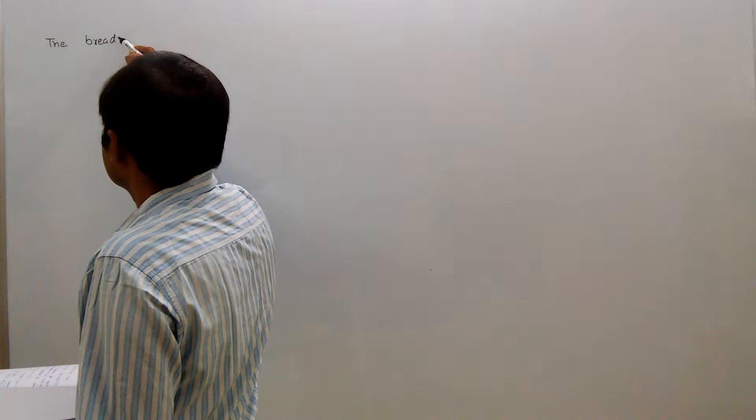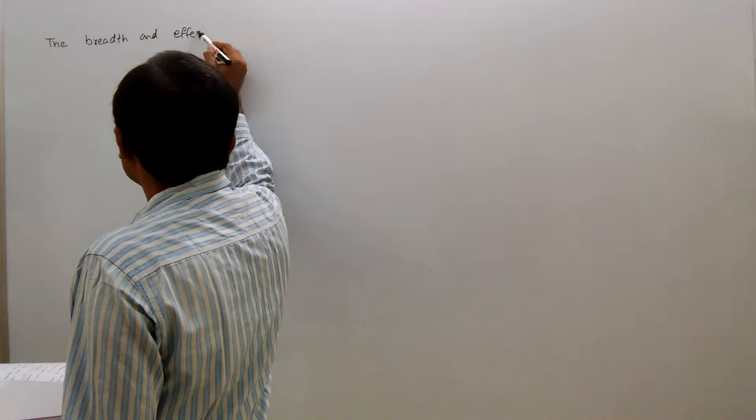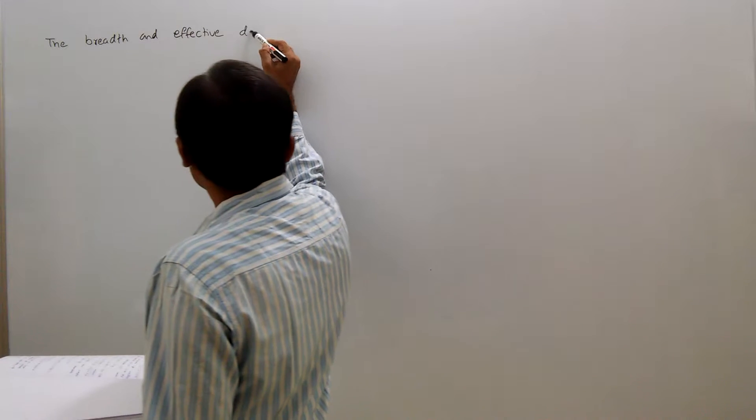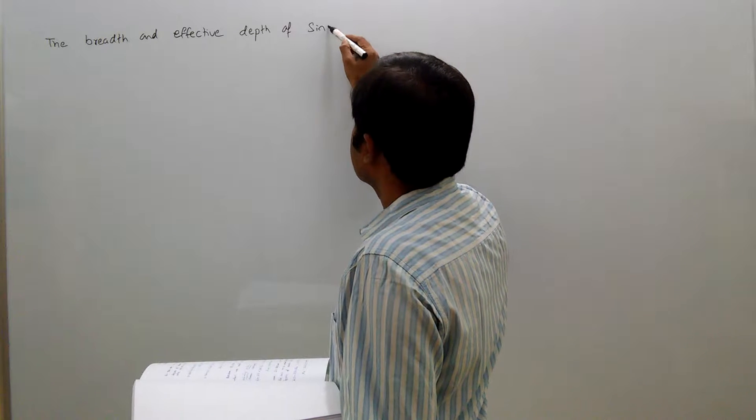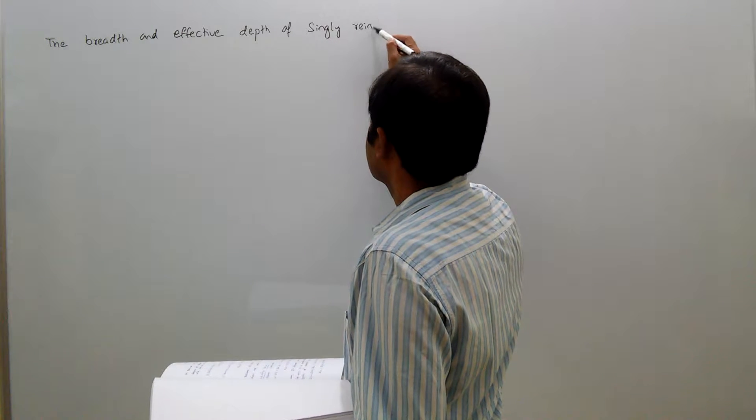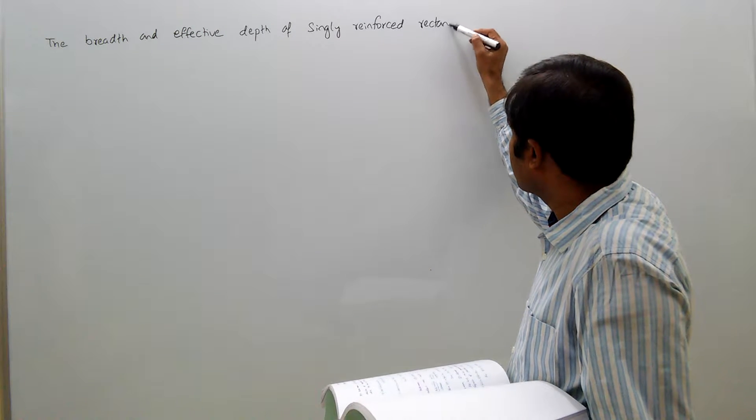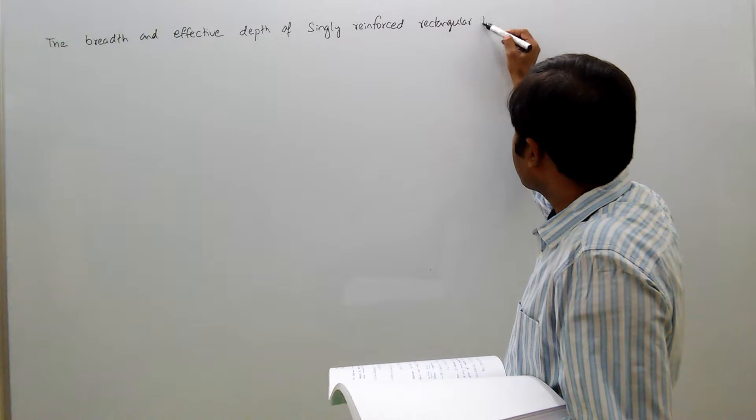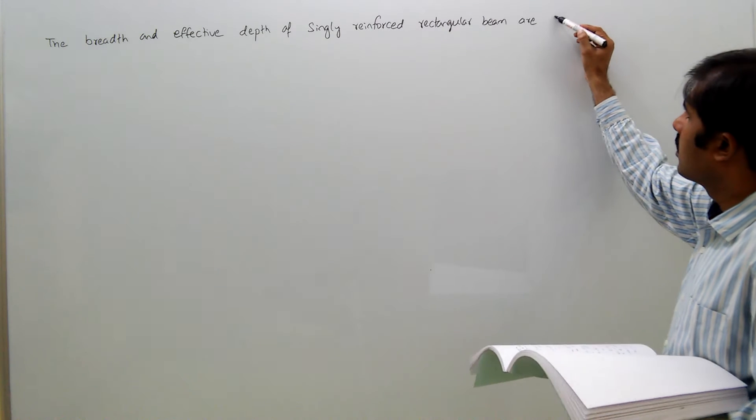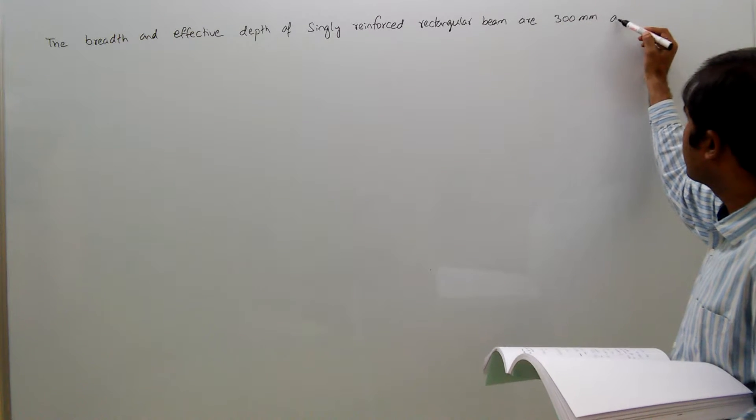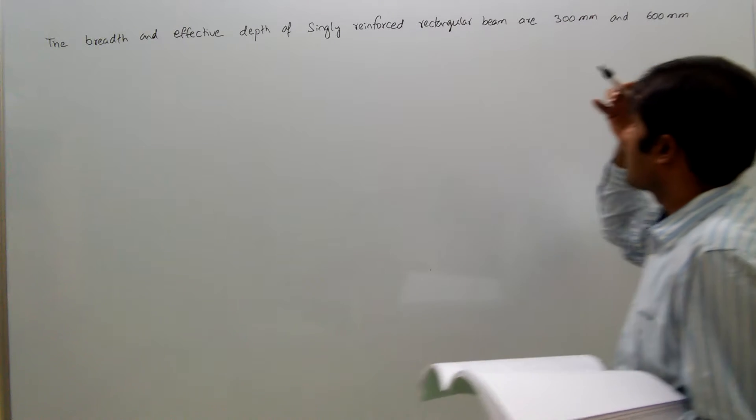The breadth, depth, and effective depth of a singly reinforced rectangular beam are 300 mm and 600 mm respectively.